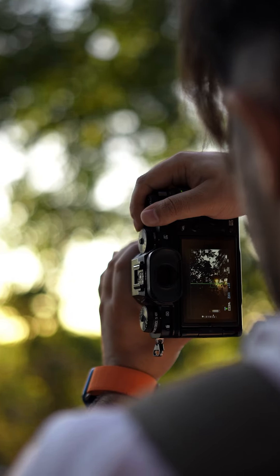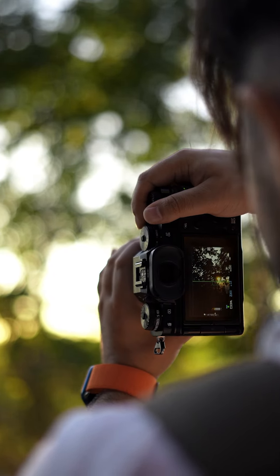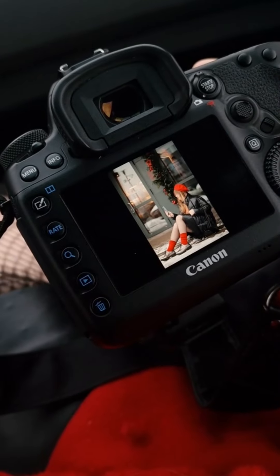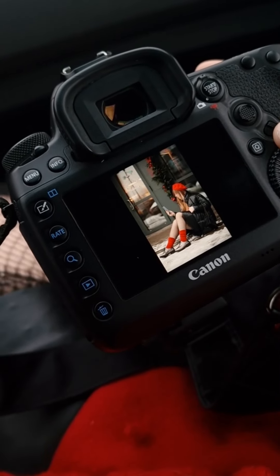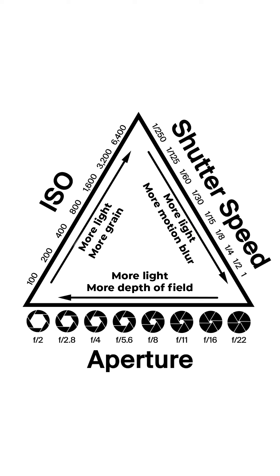Grain, depth of field, and motion blur are all image traits that you can experiment with, depending on the shot. There is no perfect setting, and the exposure triangle should be used as a general foundation. Try it out, and like this video for more pro-grade quick tips.